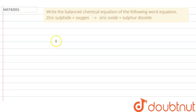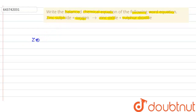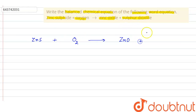Hello everyone, let us solve this question. The question says: write the balanced chemical equation of the following word equation — zinc sulfide plus oxygen gives zinc oxide plus sulfur dioxide. So in this question, a word equation is given and we have to write the balanced chemical equation for it. Zinc sulfide is ZnS, oxygen is O₂, and they form zinc oxide ZnO plus sulfur dioxide SO₂.